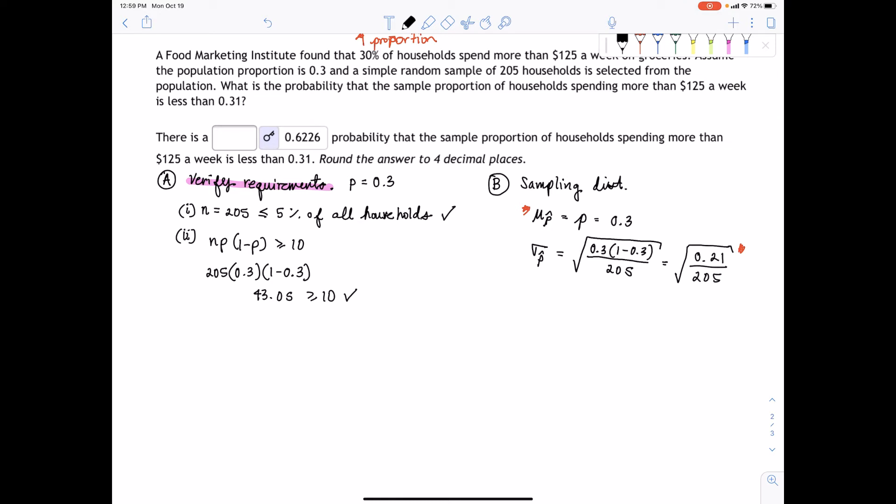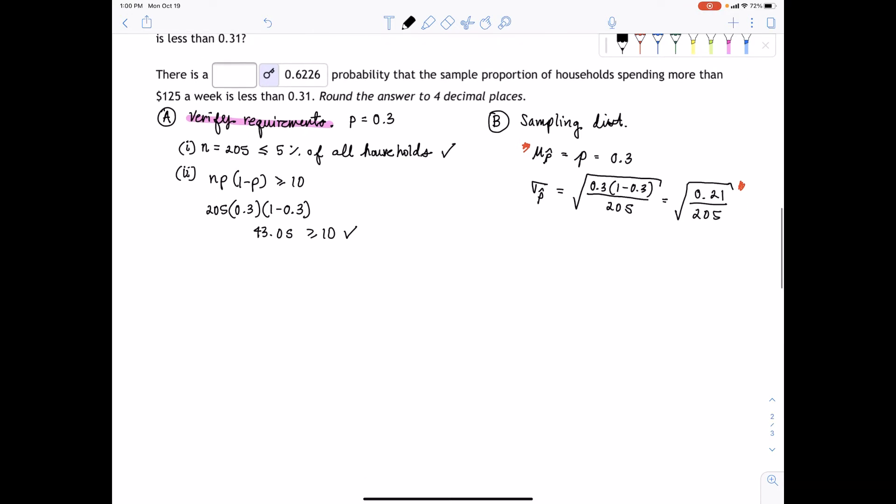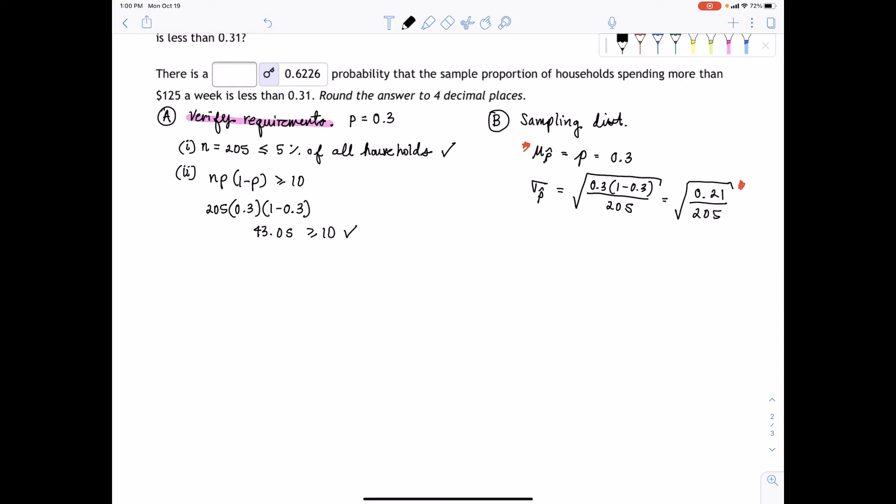Now we are ready to actually answer the question. What is the probability that a sample proportion of households spending $125 or more a week is less than 0.31? So what we are saying is, if I drew a little picture, here are all households. What if I took a whole bunch of samples of 205 households?